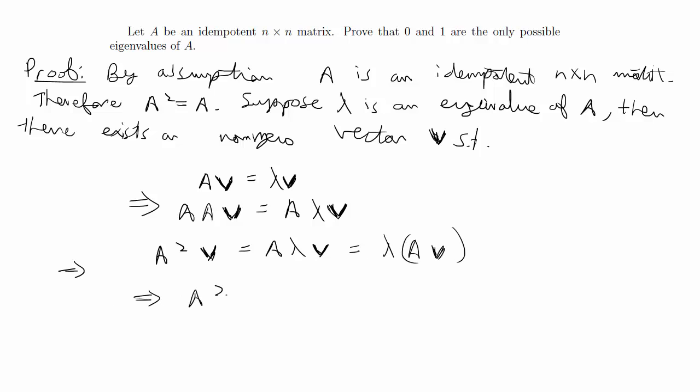Then we know that A squared V is equal to lambda and then this is equal to lambda V. We have lambda times lambda V. We successfully got just lambda squared V on the right-hand side.